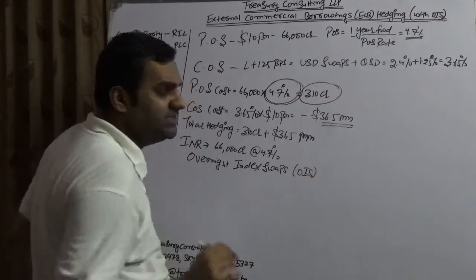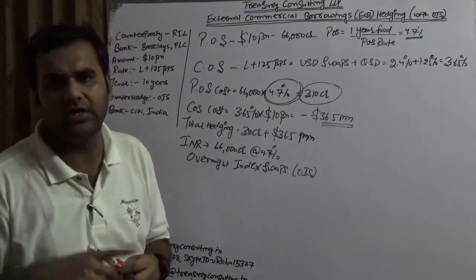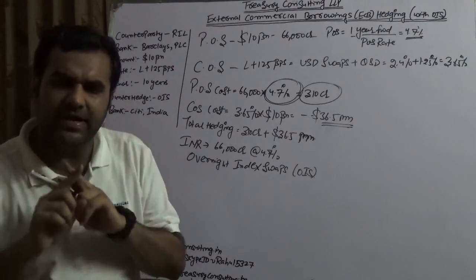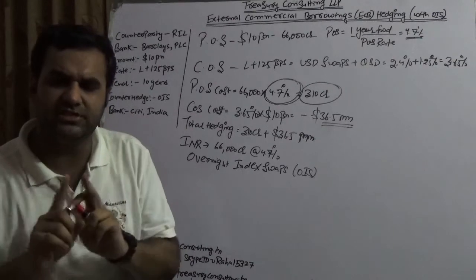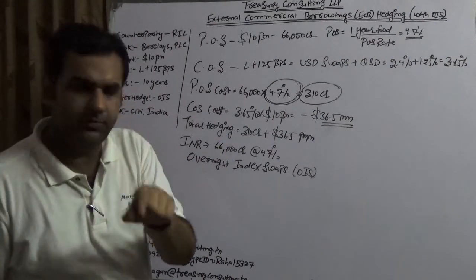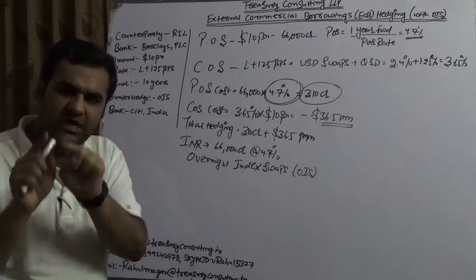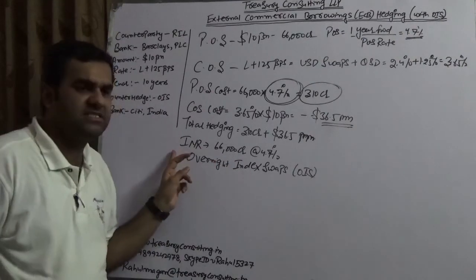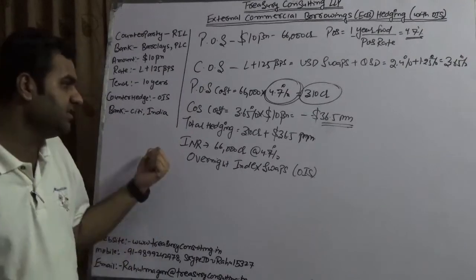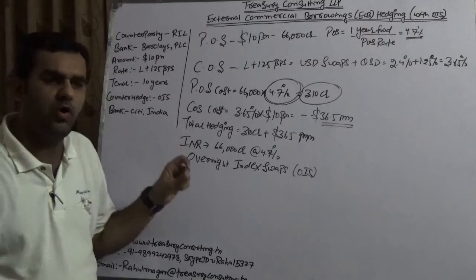What is this OIS? Overnight Index Swap is hedging of local currency loan in local currency books. In my entire definition, I have not generalized it to any currency. I am saying it is a hedging of a local currency loan, which is 66,000 crore Indian rupee in local currency books - Reliance Industries Limited India books where the functional currency is Indian rupee - in local country. Reliance Industries Limited India is hedging. So this is a perfect example of taking OIS on External Commercial Borrowing.